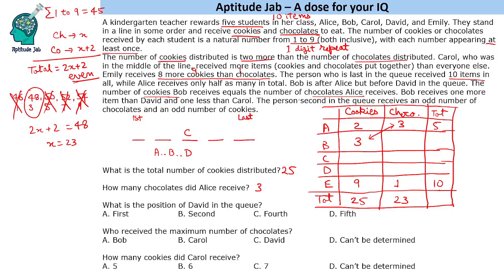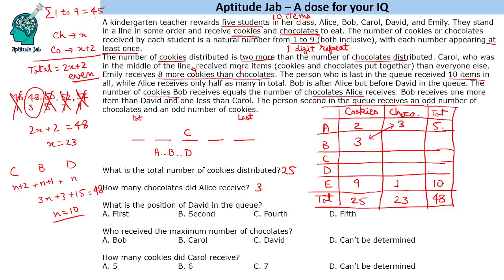Bob receives one more item than David and one less than Carol. Let David receive n items, then Bob receives n plus 1 and Carol receives n plus 2. The total distributed is 48, and Alice plus Emily together account for 15 items, so these three total 33: 3n plus 3 equals 33, giving n equals 10. So David receives 10 items, Bob receives 11, and Carol receives 12.